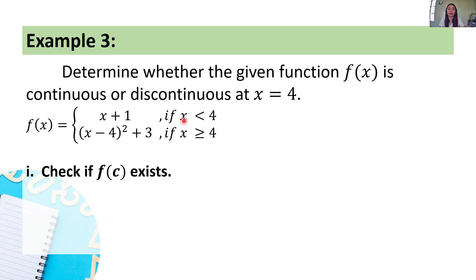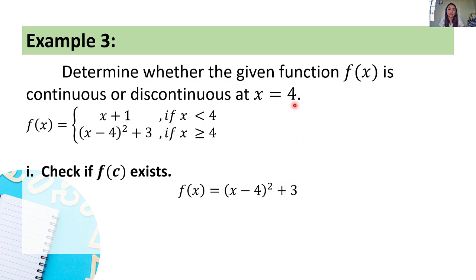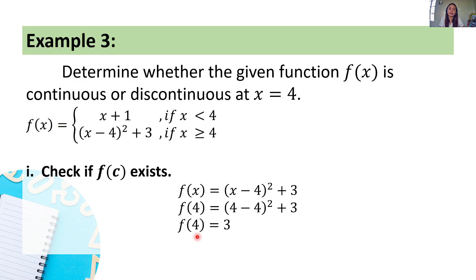Let's check the first condition — does f of 4 exist? Our c is 4. We need to determine which sub-function applies. Since x equals 4 falls under the condition x greater than or equal to 4, we use the second sub-function: f of x equals the quantity of x minus 4 squared plus 3. So f of 4 equals the quantity of 4 minus 4 squared plus 3 equals 0 squared plus 3 equals 3. Hence, f of 4 exists and equals 3.